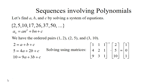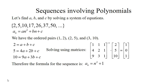We take the inverse of the coefficient matrix times the constant matrix, which gives us 1, 0, and 1 — so a is 1, b is 0, and c is 1. That means our formula is n squared plus 1. If we plug in 5 we get 5 squared plus 1, which is 26, and that matches the sequence, so it appears to work.